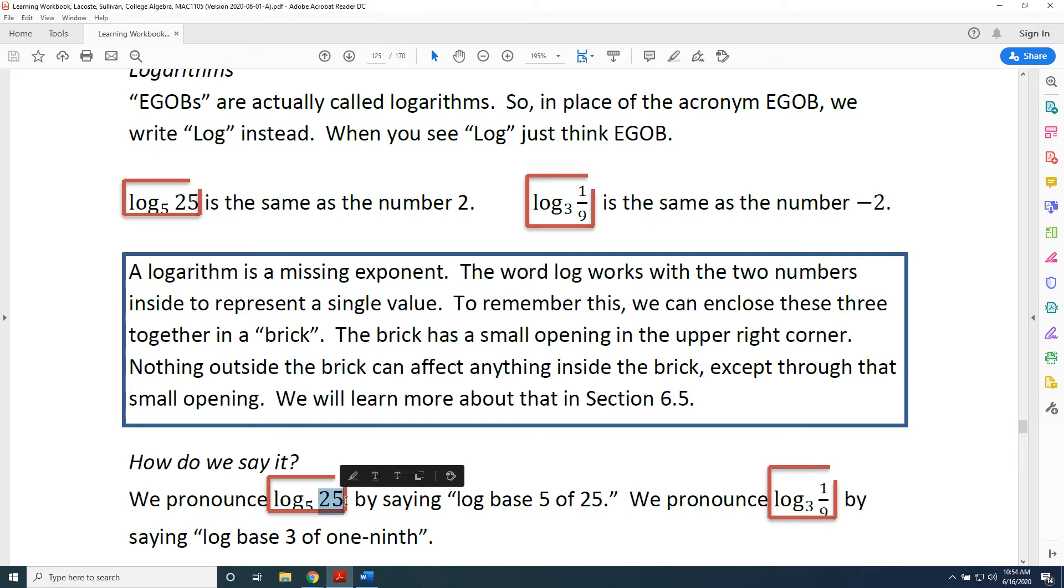And the second number, which is on the same line as the word log - in other words, the 5 is lower, but the log and the second number are at the same height - the second number is the thing you're taking the log of. So therefore we say the word of before the second number. Say base before the first number, say of before the second number.